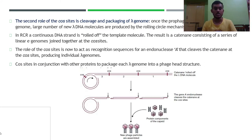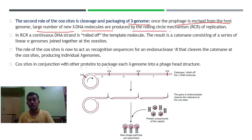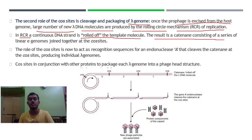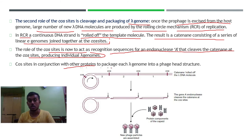The second role of the cos site is in cleavage and packaging of the lambda genome. Once the prophage is excised from the host genome, large numbers of new lambda DNA molecules are produced by the rolling circle mechanism of replication (RCR). This produces a catecane — a series of linear lambda genomes joined together at cos sites. The cos sites then act as recognition sequences for endonuclease A, which cleaves the catecane at cos sites to produce individual lambda genomes.